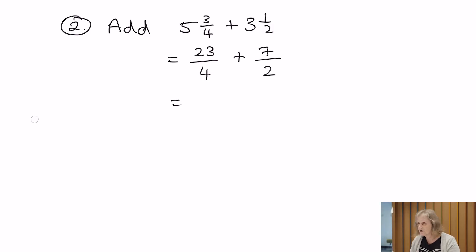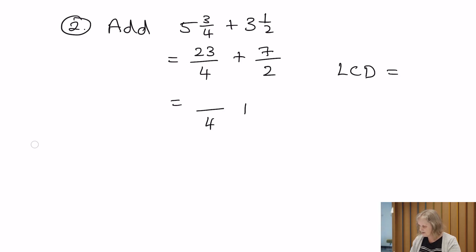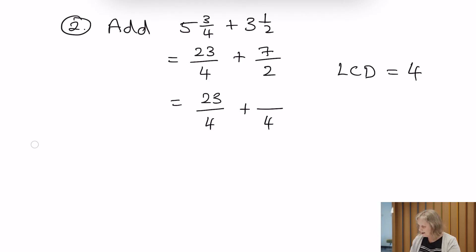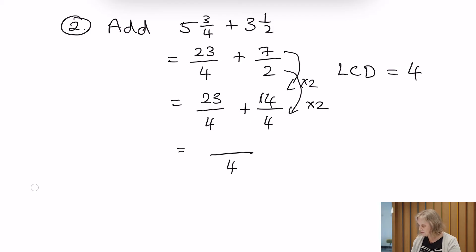We've got two improper fractions. Now we're going to find the lowest common denominator — we've got a 4 and a 2. The first time they match is going to be at 4, so we need a common denominator of 4. The first fraction is already done: 23 over 4. For the second fraction, 2 times 2 gives us a denominator of 4, so likewise we do 7 times 2, which gives us 14. We've got the same denominator, so we can just add the two numerators — that gives us 37 over 4.